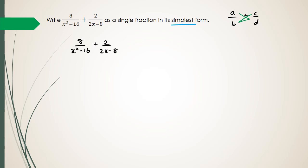So when I factorize my denominators, x squared minus 16 could be written as x minus 4 and x plus 4. And as for the 2x minus 8, could be written as 2 times x minus 4.